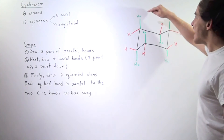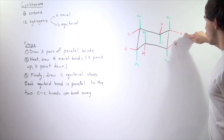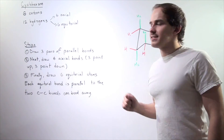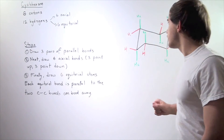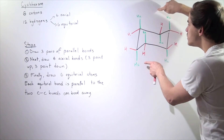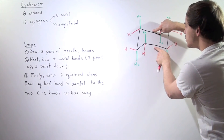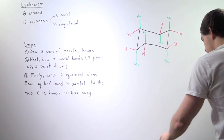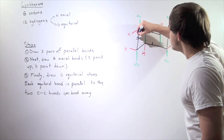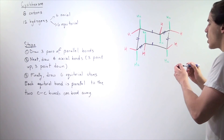So we should have six axial — one, two, three, four, five, six — and six equatorial — one, two, three, four, five, six. So once again, we have 12 H atoms: six axial, six equatorial, and six carbon atoms connected in a ring-like fashion. Opposing sigma bonds between the carbon and carbon are parallel — these two are parallel, these two are parallel, and these two are parallel. So opposing sides are parallel.